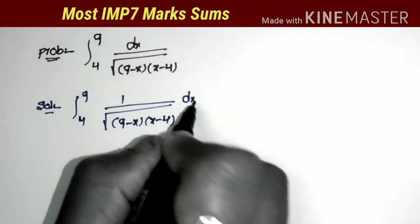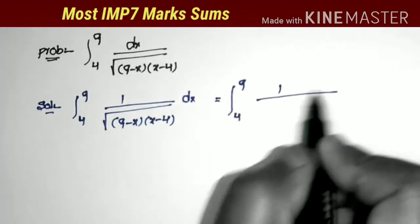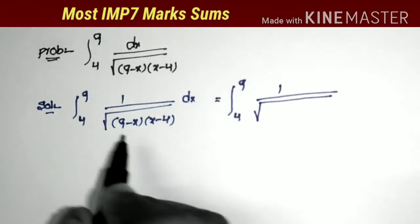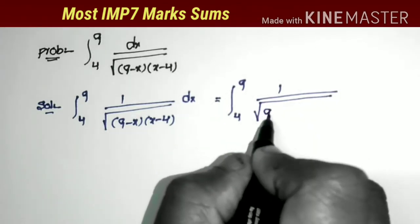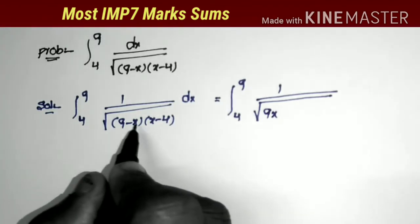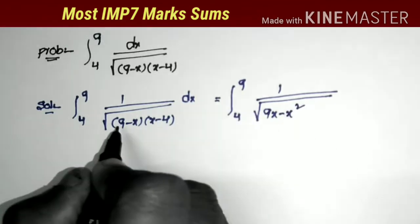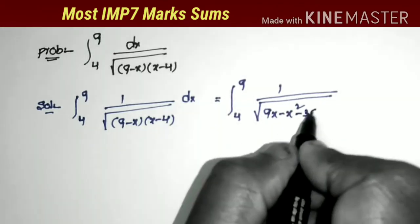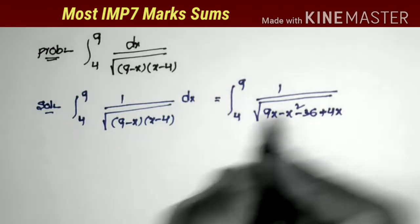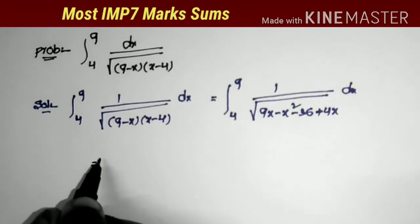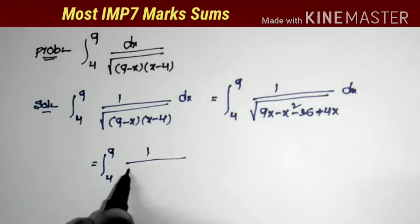To solve this, we first multiply out the denominator values. Taking the product: 9 times x = 9x, minus x times x = x squared, minus 4 times 9 = minus 36, minus 4 times negative x = plus 4x. So we multiply the values of the denominator and this equals integral from 4 to 9 of 1 by square root of that product dx.